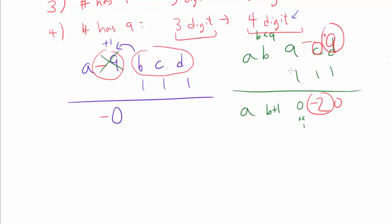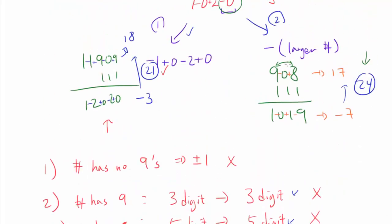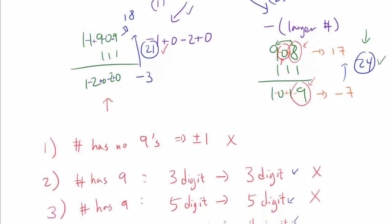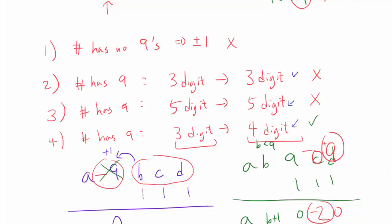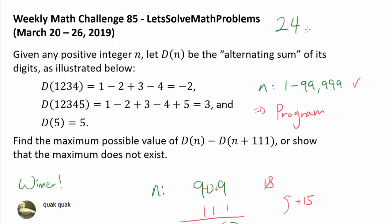The only way of going from a 3-digit number to a 4-digit number is to have something like 9, A, B and add 111, or 8, 9, B and add 111. For the latter, we start with a negative 1, whereas in the former we have the possibility of starting with 9 — so we discard the latter. For the case 9, A, B, we want to maximize d of n while minimizing d of n plus 111. The way to do so is to have plus 8 and minus 9, which leads to the maximum difference of 24. So the maximum is reached in this final case, and the answer to this question is 24.